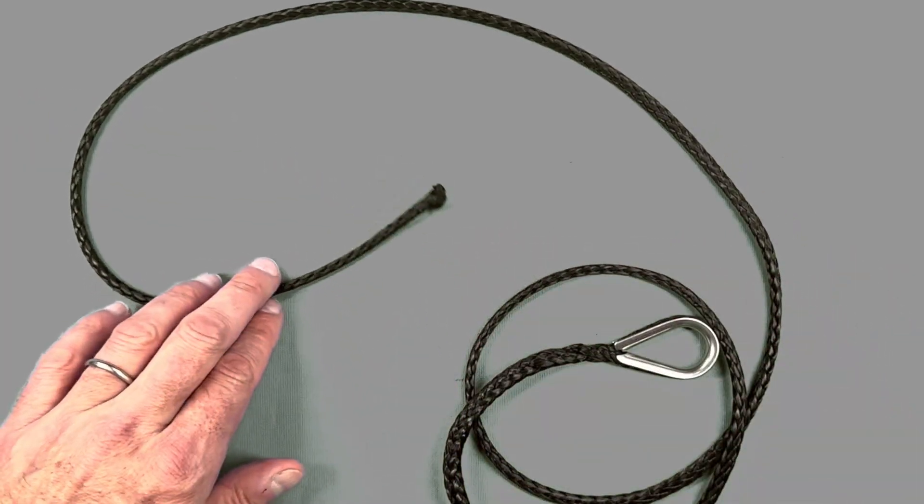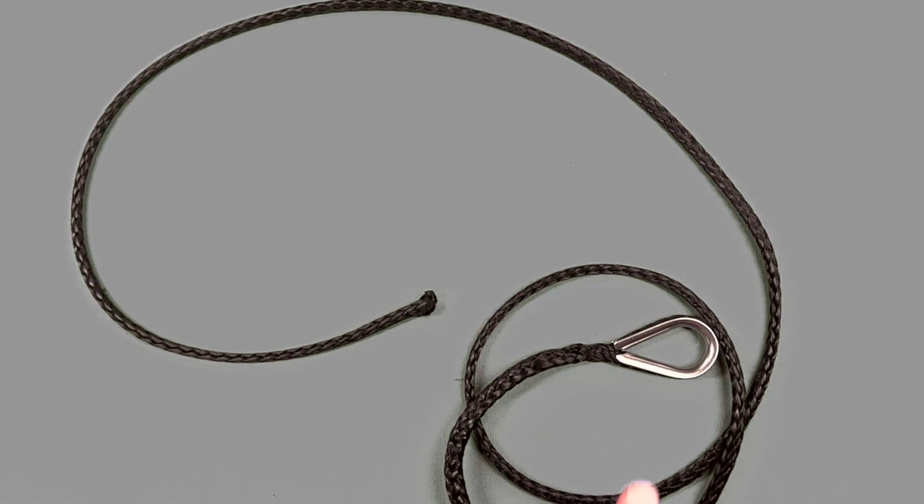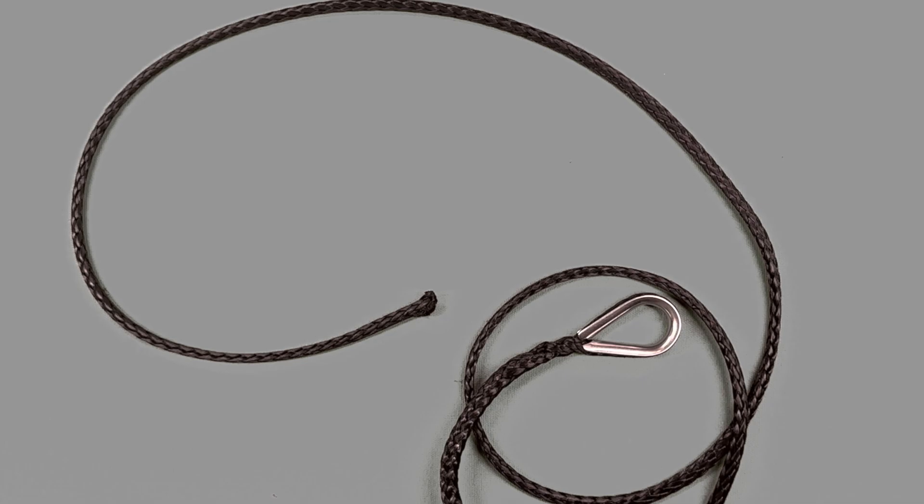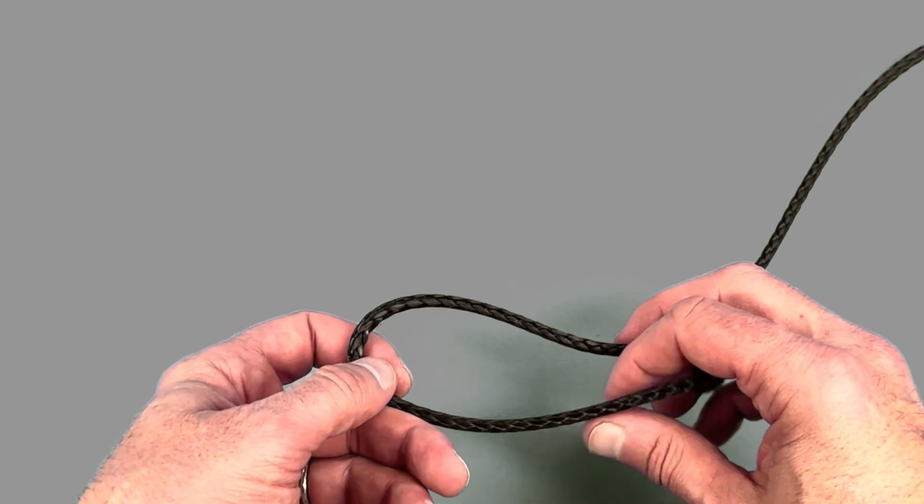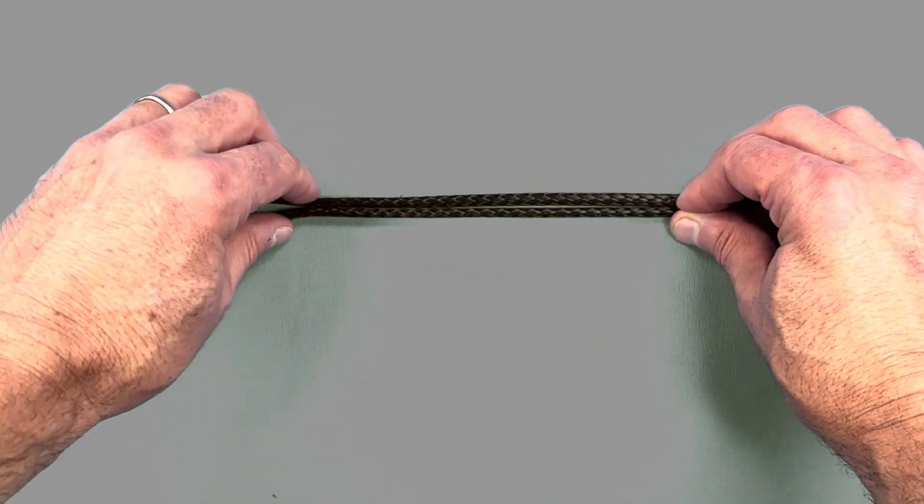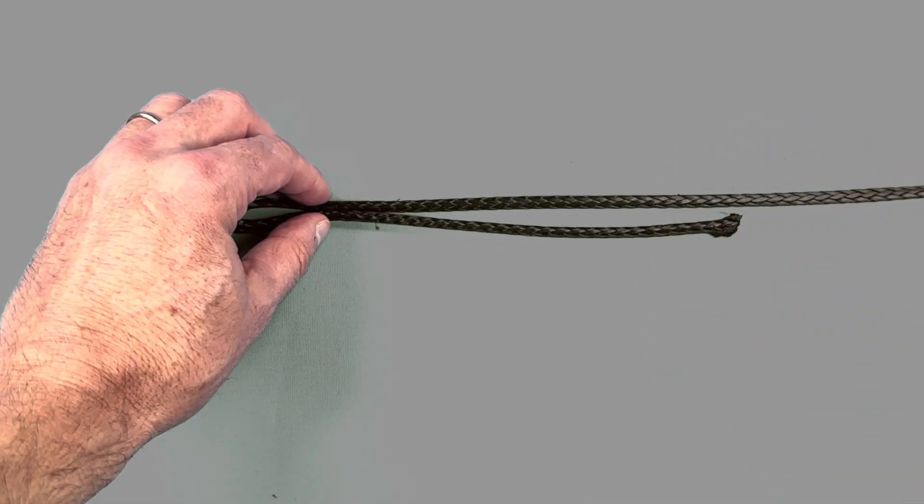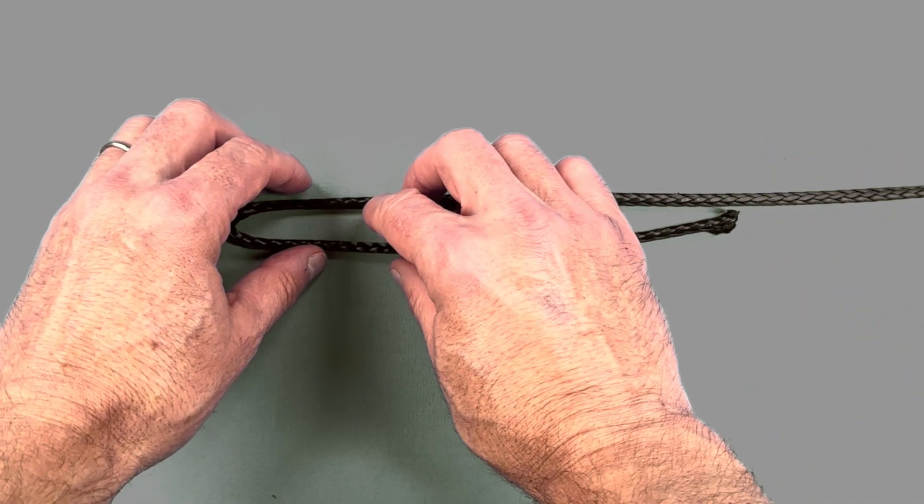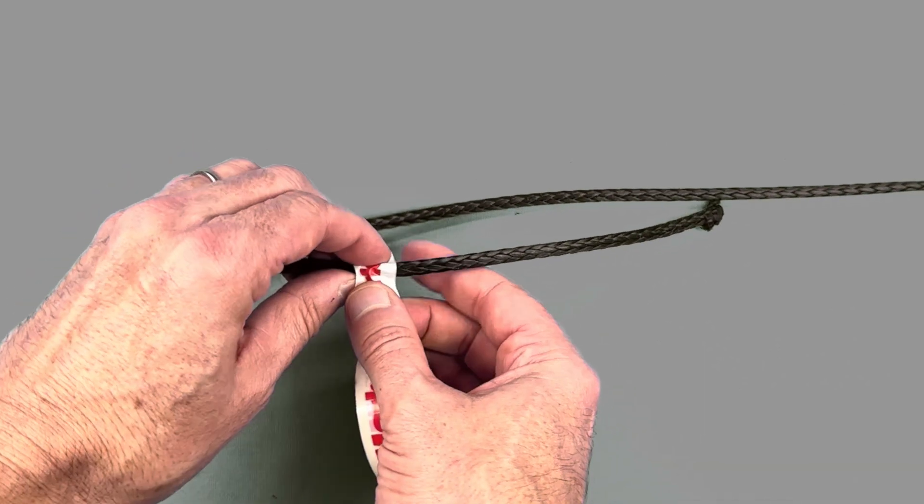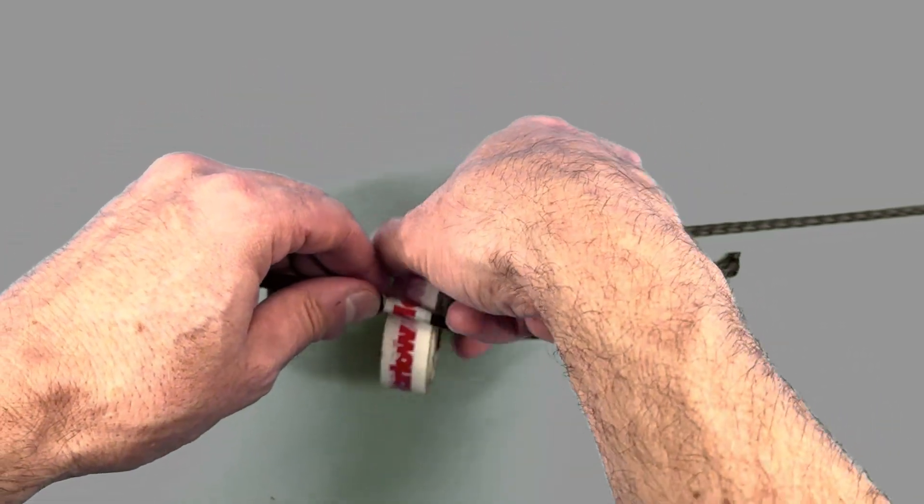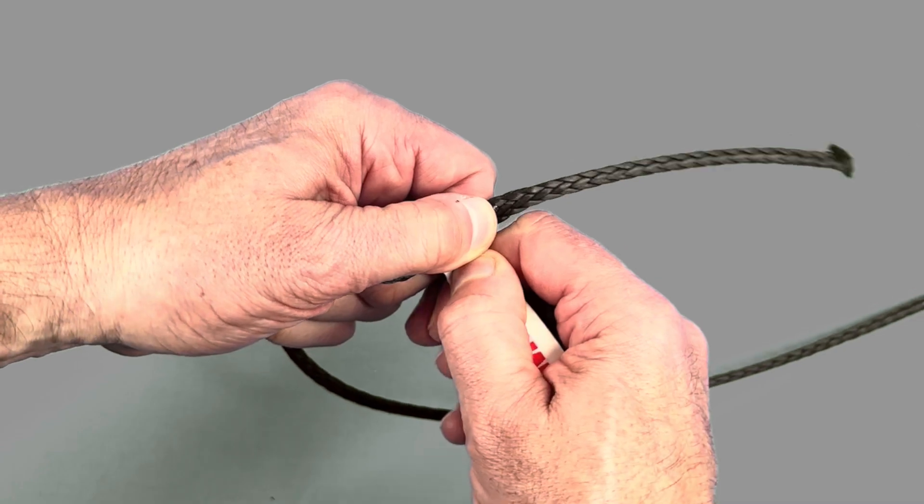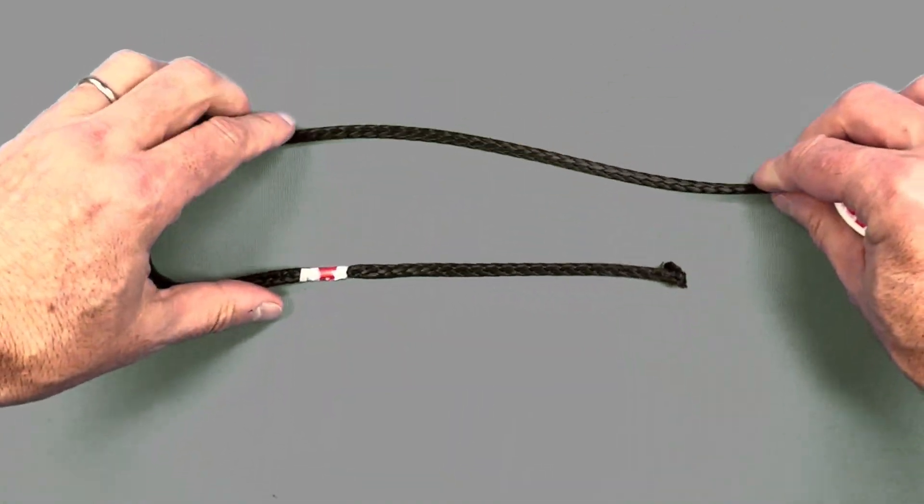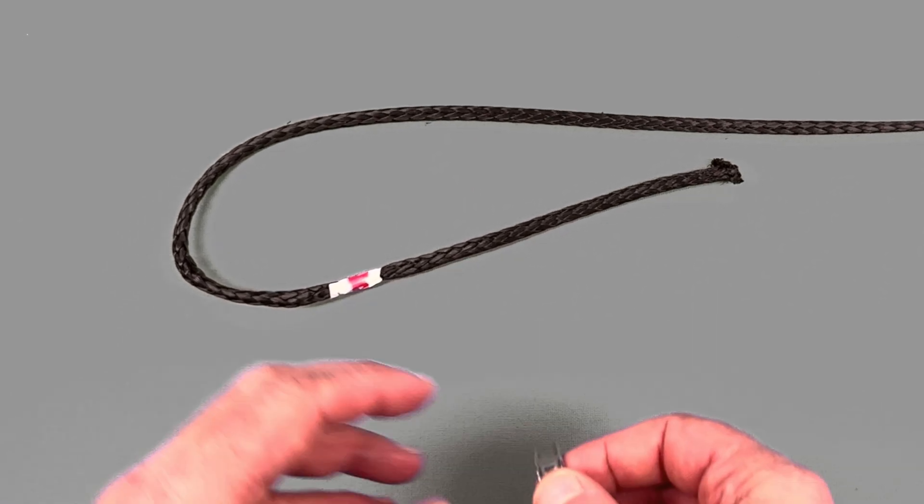To complete the second splice with a thimble we're going to need a different technique as we will not be able to put the thimble from the standing end through the Dyneema to complete our Brummel splice. So the second way is started in a similar fashion to the first. You get about 1.5 fid lengths on the working end and then put a bite into your line. The second step after creating the bite is to grab a piece of tape and wrap it around the working end. We're going to use this as a marker point for where we complete our splice after aligning the thimble.